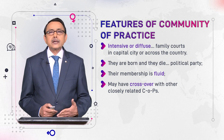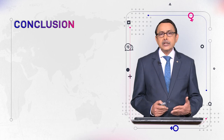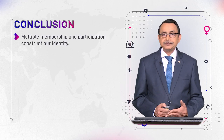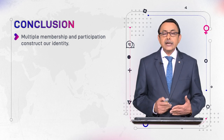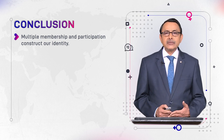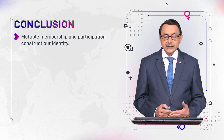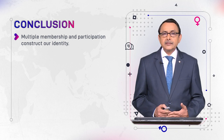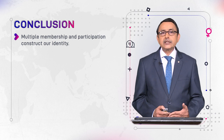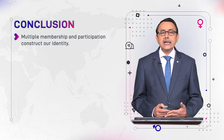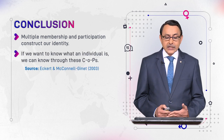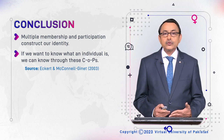Multiple membership and participation construct our identity. We can be members of more than one COP, and because of this multiple participation and membership, we get our identity. Every COP gives us a new identity, and the sum total of these identities is actually our identity. Identity is in fact a plural notion — if we want to know what an individual is, we can know through their COPs.